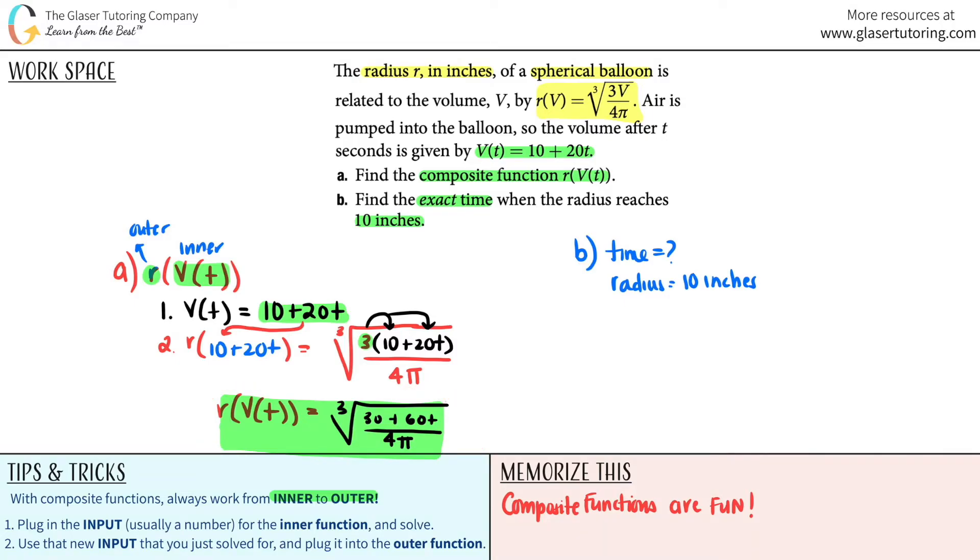So I'm going to use this formula that they gave me over here. I'm going to simplify this as well. Actually, I'm first going to write it and then I'll tell it to you guys. So right now we have this. I'm going to take the one at the bottom, the one that we simplified. So this would be 30 plus 60t all over 4π.